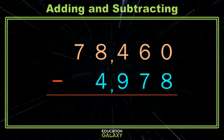Now you see here, if we try and take eight away from zero, we can't. If we try and take seven away from six, we can't. If we try and take nine away from four, we can't. So what are we gonna do? Well, we're gonna have to do a little borrowing or regrouping work.